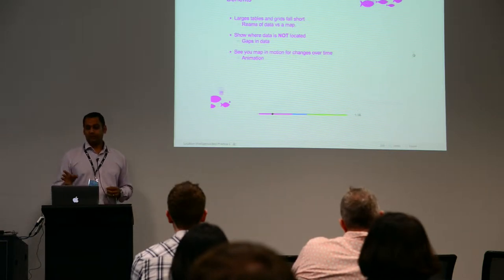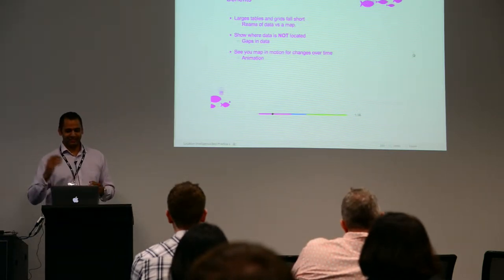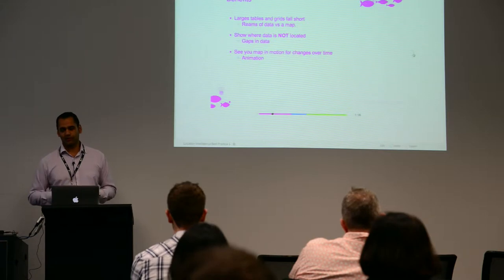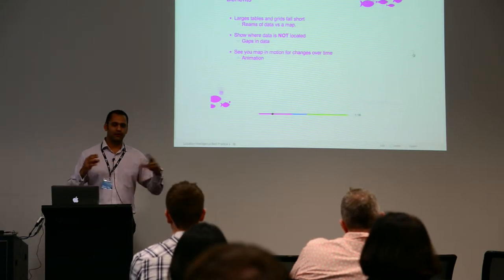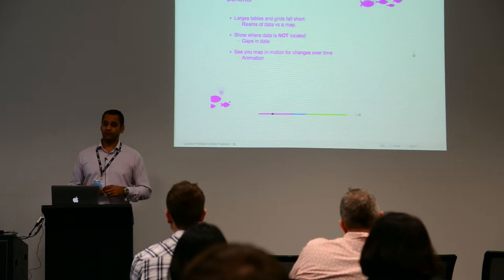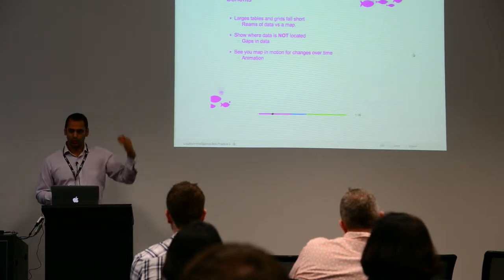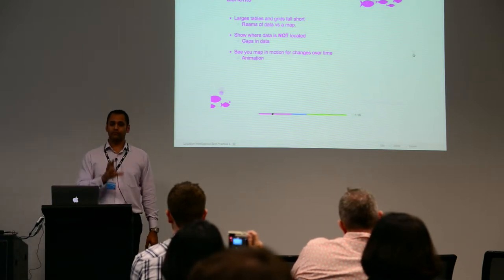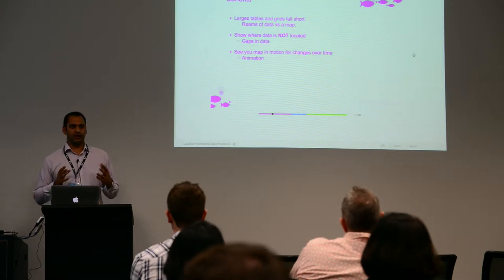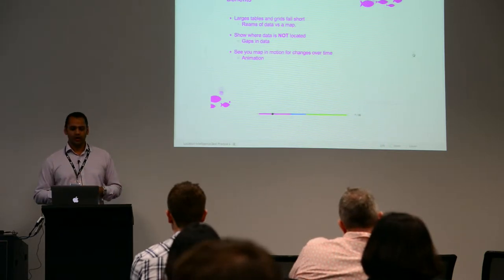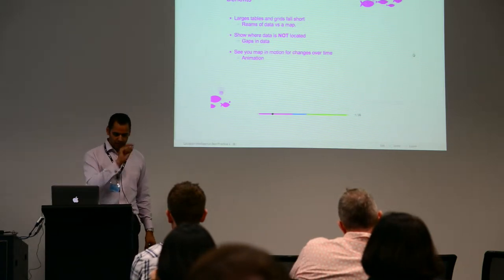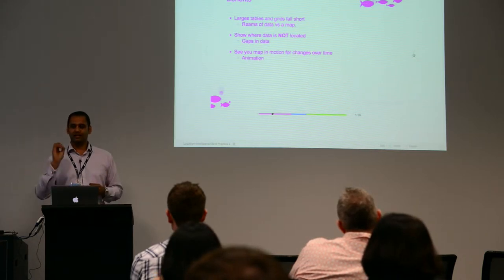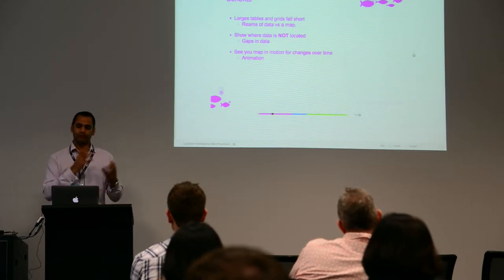What are the key benefits? First and foremost, visualizing data on a map makes it much easier to process. Consider looking at all of Australia's crime stats alongside population data — trying to find hot spots through reams of data is a very hard task, if possible at all. Versus seeing that on a map and immediately understanding the northern suburbs' crime levels and the hot spots around key geographical areas. You can see and process that straight away.